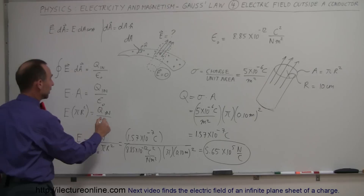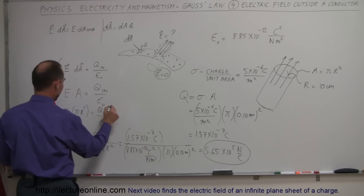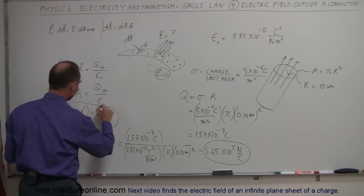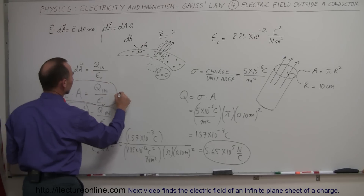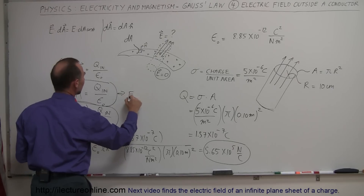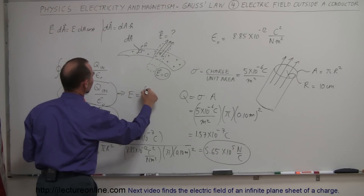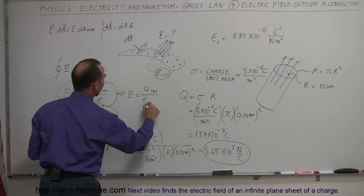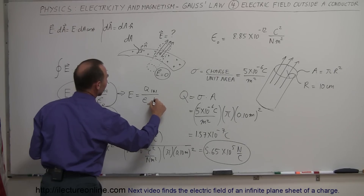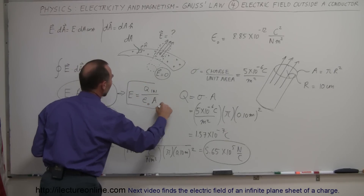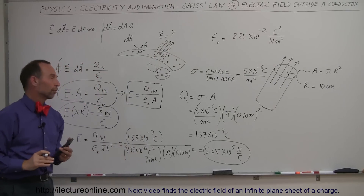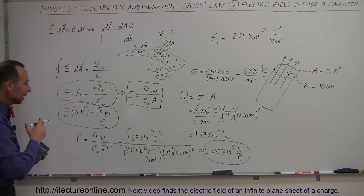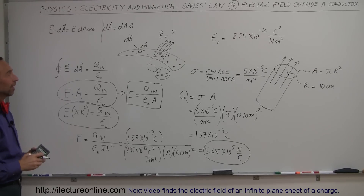In general terms, the electric field just outside a conductor equals Q inside your Gaussian surface divided by epsilon sub nought divided by the area perpendicular to the surface from your Gaussian surface. That's how you find the electric field strength just outside a charged conductor surface.